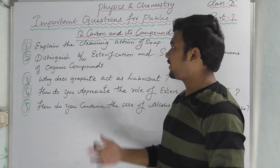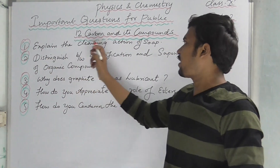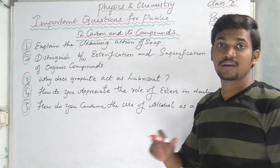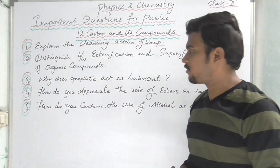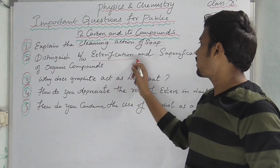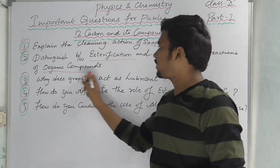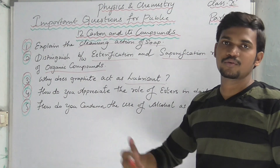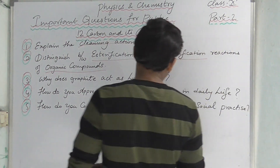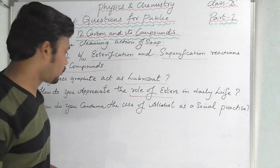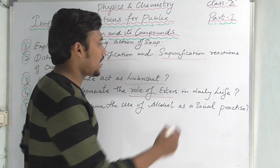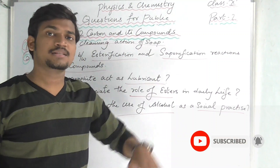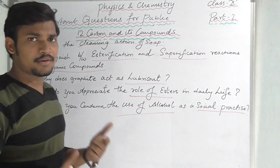The next important chapter is Carbon and its Compounds, with five important questions. Explain the cleansing action of soap — this is very important. Distinguish between esterification and saponification reactions of organic compounds. Why does graphite act as a lubricant? How do you appreciate the role of esters? How do you condemn the use of alcohol as a social practice? These are all topics you have to write about.